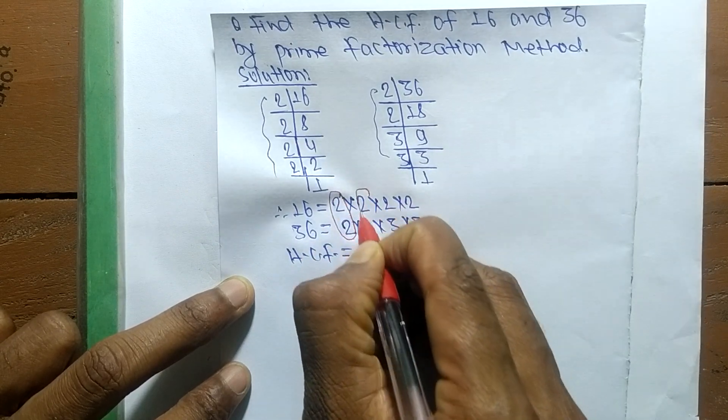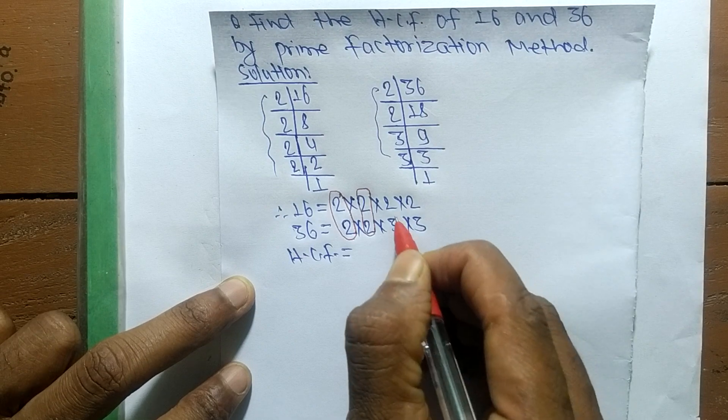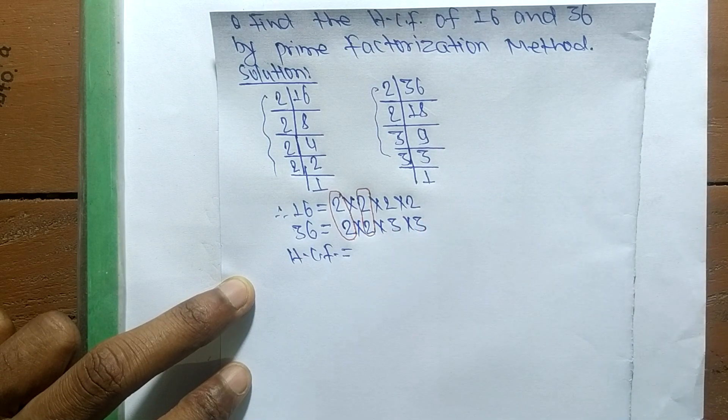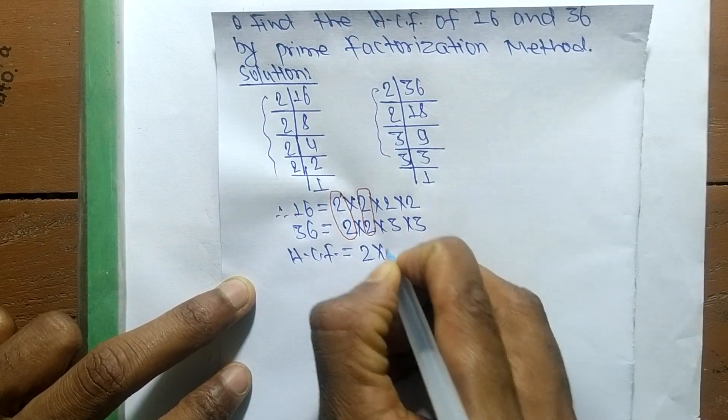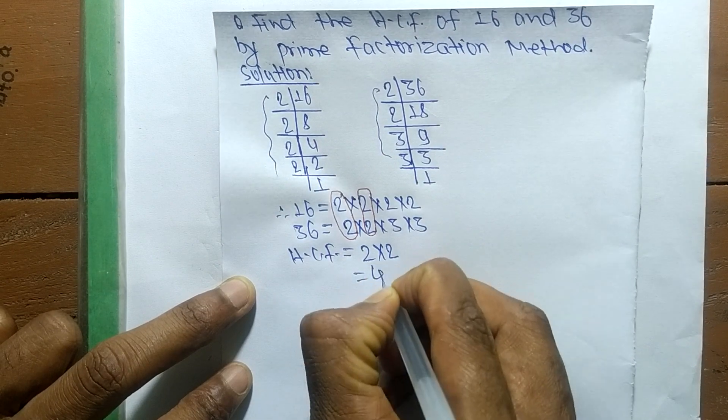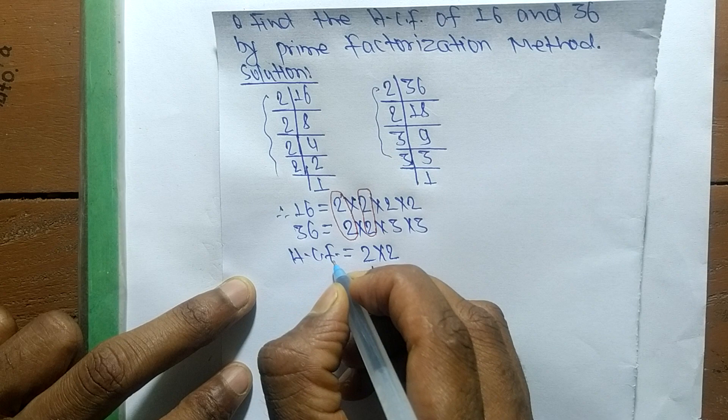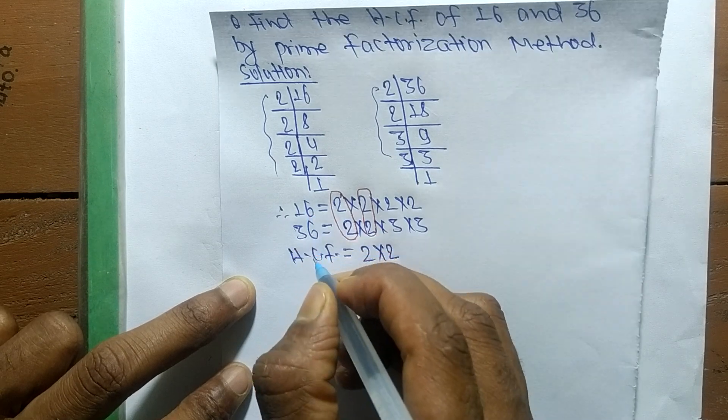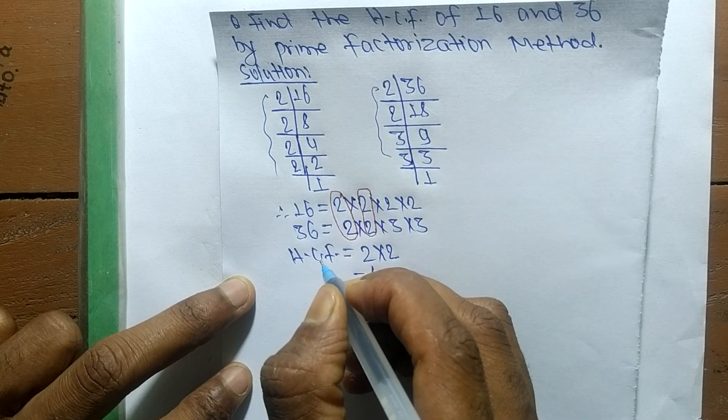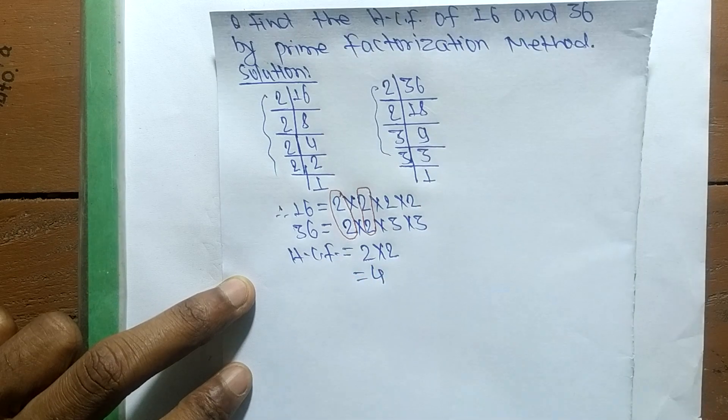And the second one is again 2, and no more. So it is 2 times 2, which is equal to 4. So 4 is the highest common factor of 16 and 36. So this much for today, and thanks for watching.